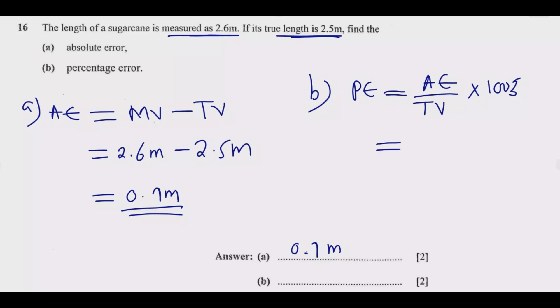So you have the absolute error of 0.1, then divide by the true value 2.5, then multiply by 100. So when I try this one, 0.1 times 100 I'm going to get 10.